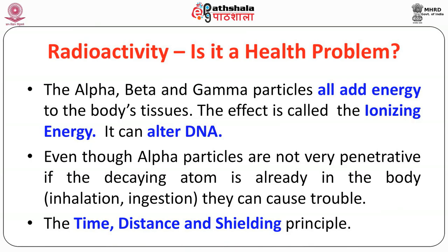Does radioactivity give health problems? Alpha, beta and gamma are all ionizing radiations. Ionizing radiation ionizes matter — when it comes and interacts with the body, some reaction and effects take place. Alpha, beta and gamma particles all add energy to body tissues; this effect is called ionizing energy and it can alter DNA. Even though alpha particles are not very penetrative, if the decaying atom is already inside the body through inhalation, it can cause harm. When a radioactive material goes inside the body through inhalation or ingestion, it decays and alpha and beta will harm the tissue, though gamma may come out.